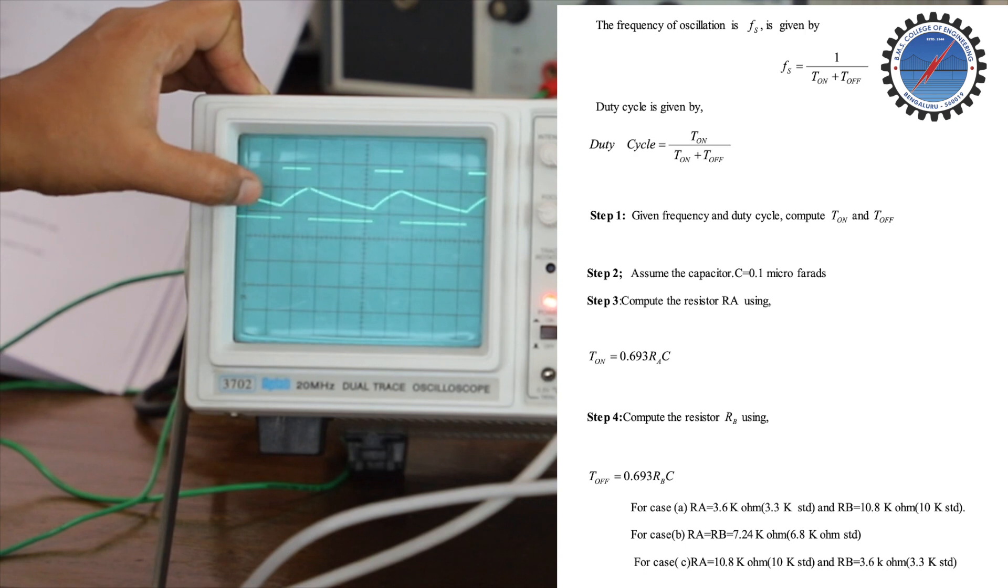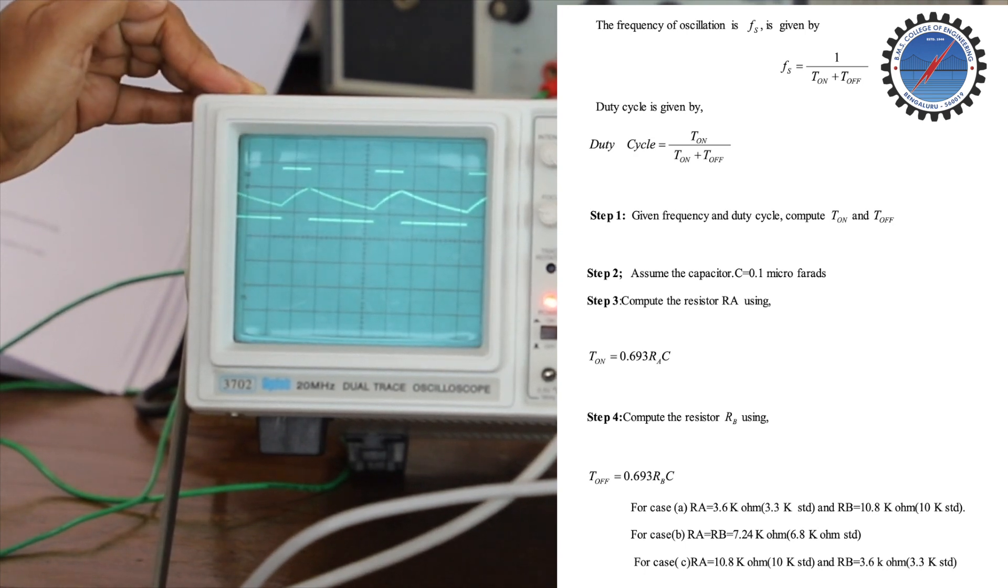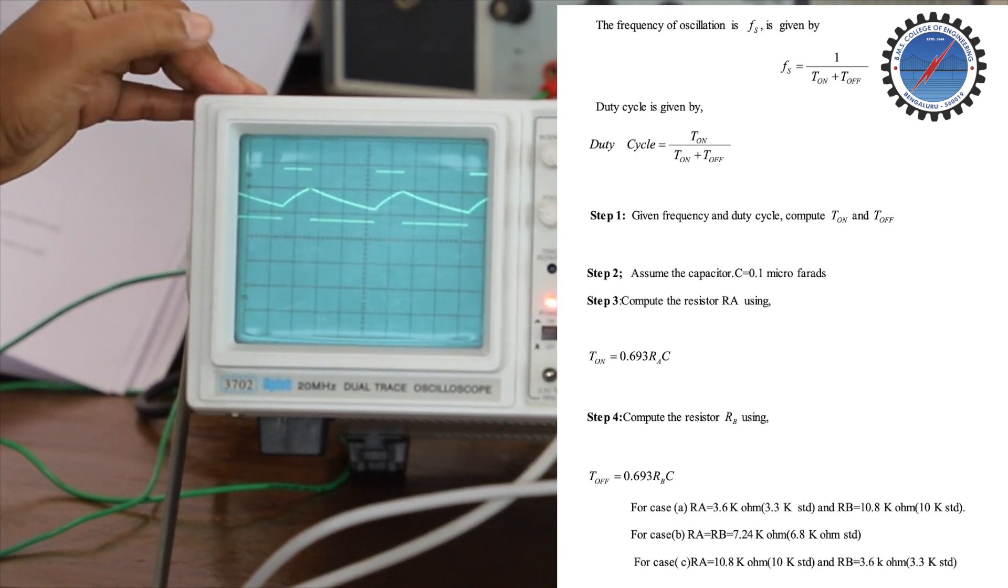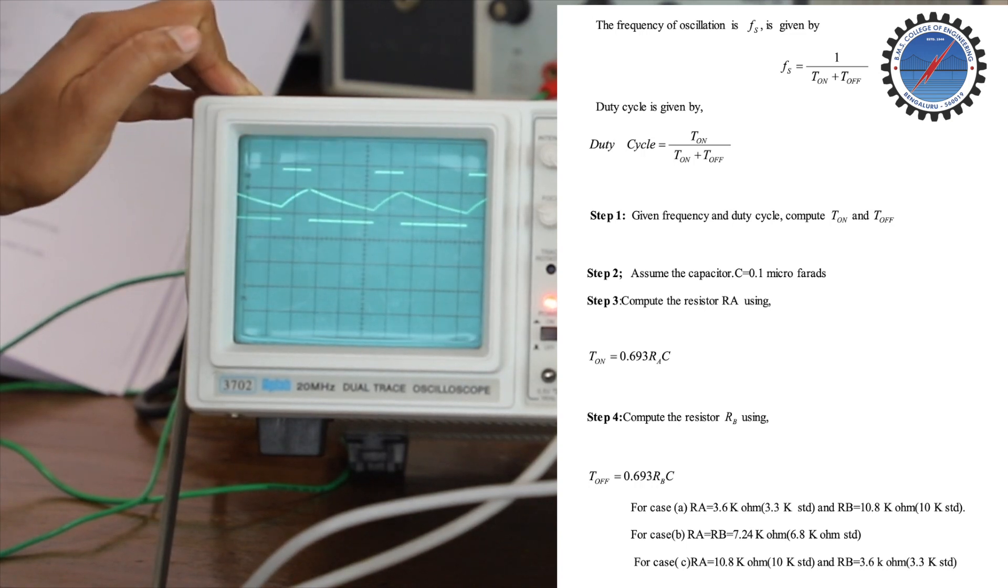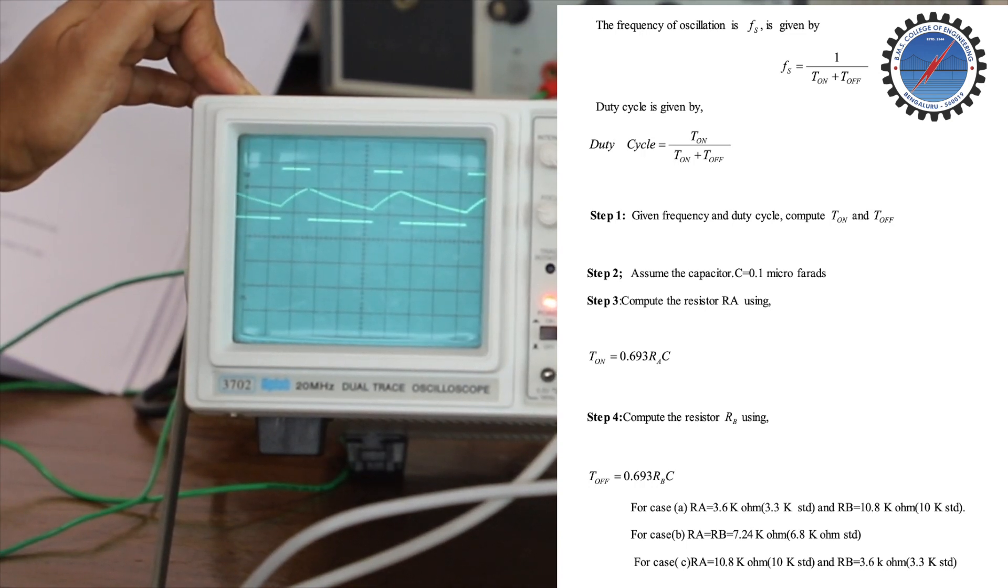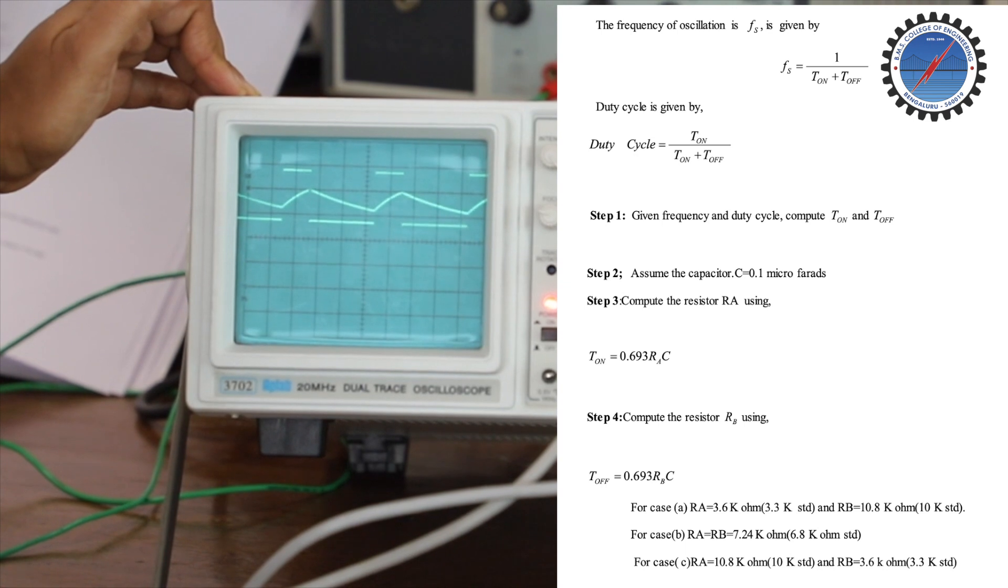It will keep switching between maximum value and minimum value. When it has to switch from maximum to minimum depends upon the charging value that appears across the capacitor.